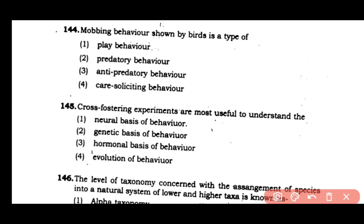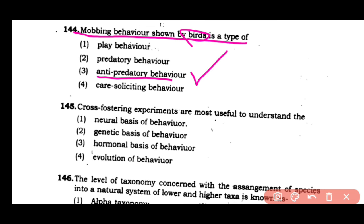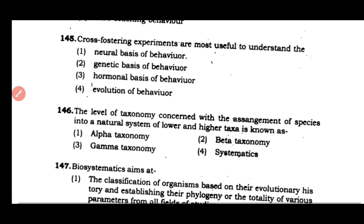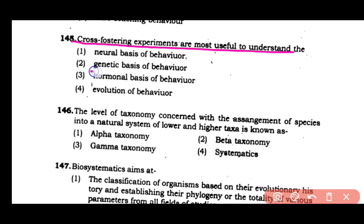Question number 144: The correct answer relates to a type of anti-predatory behavior shown by birds. Question number 145: Cross-fostering experiments are most useful to understand the genetic basis of behavior. The correct answer is option 2.